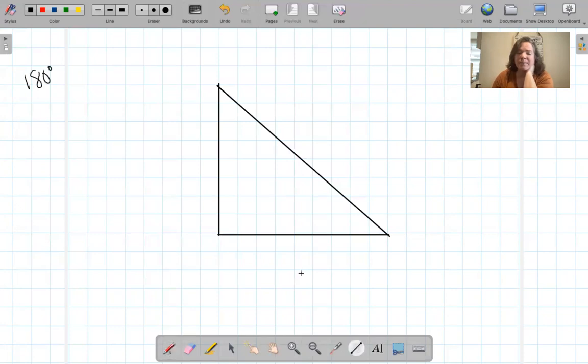So this angle is 90 degrees. You know that because this little symbol right here means 90 degrees. Now, I'm going to say this angle is 45 and this angle is X.